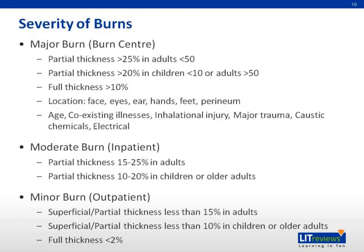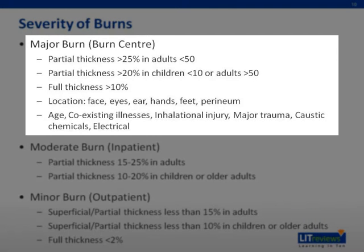Having learned how to assess burns by depth and size, we can now categorize them according to severity. Someone is likely to have a major burn if it is a partial thickness burn more than 25% of the total body surface area in an adult less than 50 years of age, or more than 20% in children younger than 10 and adults older than 50. Anyone with full thickness burns involving more than 10% of the TBSA, or any partial or full thickness burn involving special locations such as the face, eyes, ears, hands, feet, and perineum are also classified as having a major burn. Other factors include extremes of age, presence of comorbidities, inhalation injury, as well as onset of infection.